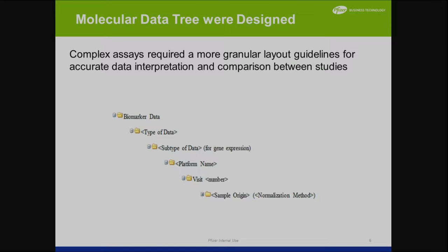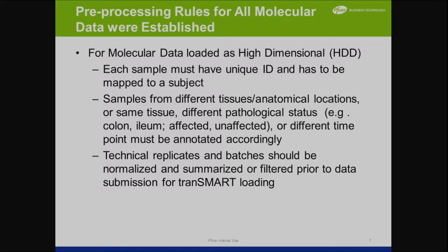We have biomarker data with the type of data, subtype, platform name, visit, and sample origin. The pre-processing rules specify that each sample must have a unique ID mapped to a subject. Samples from different tissues, anatomical locations, pathological status, or time points must be annotated accordingly. Technical replicates and batches should be normalized and summarized or filtered prior to data submission for TransMart loading.